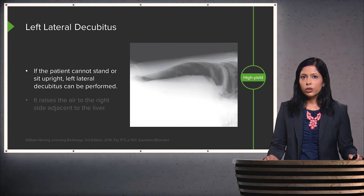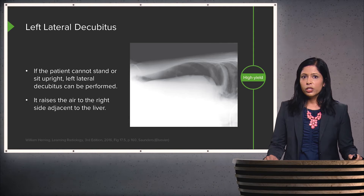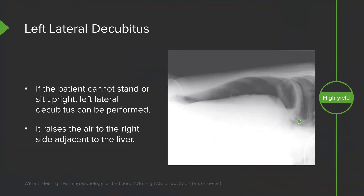You can also perform a left lateral decubitus film for patients who cannot stand up or sit upright. This raises the air to the right side, adjacent to the liver. Here you can see the patient is lying on their left side down — this is the left side, here are the ribs, this is the patient's chest — and you can see free air right adjacent to the soft tissue density of the liver.